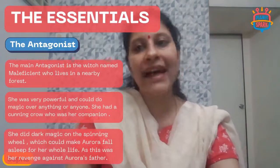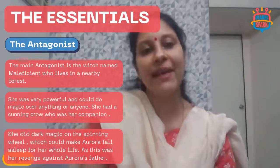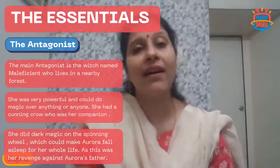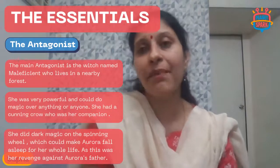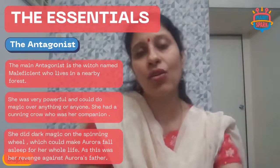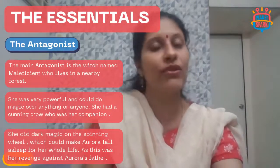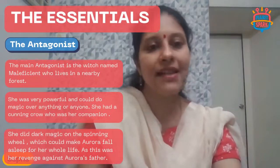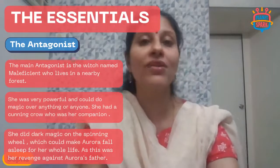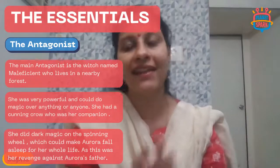The main antagonist in Sleeping Beauty is a witch named Maleficent, who lives in a nearby forest. She was powerful and could do magic over anything or anyone. She had a cunning crow as her companion. In the story, she uses dark magic involving a spinning wheel — also called a spindle — to make Princess Aurora fall asleep for her whole life, as revenge against Aurora's father, the king.